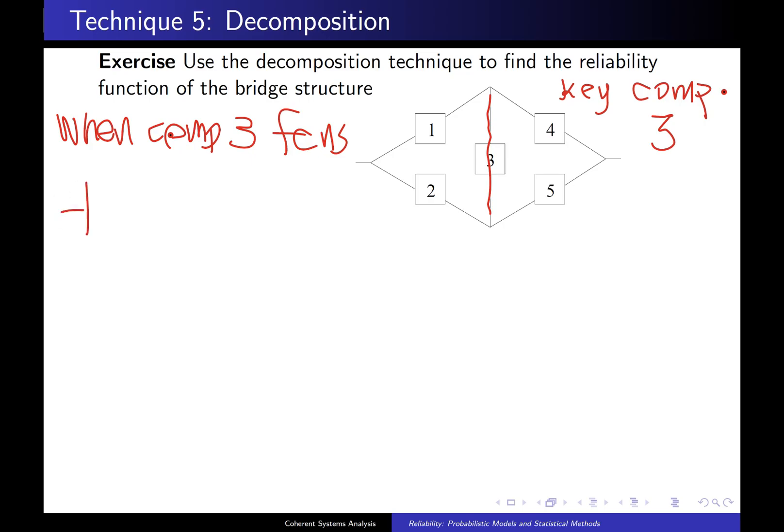It will look like this. If either 1 or 2 are working, and either components 4 or 5 are working, then this particular system with component 3 being perfect will be the result.